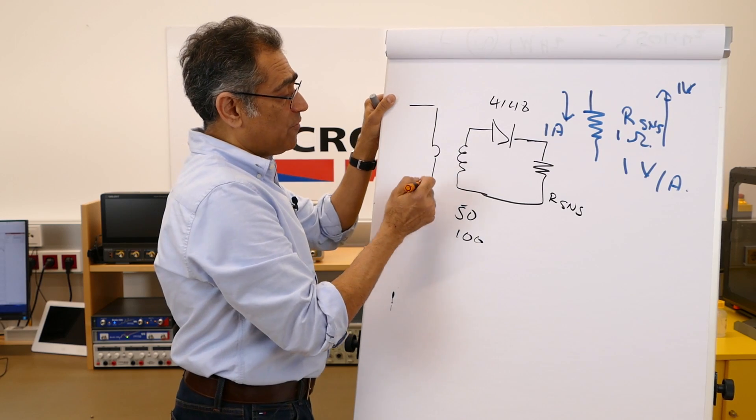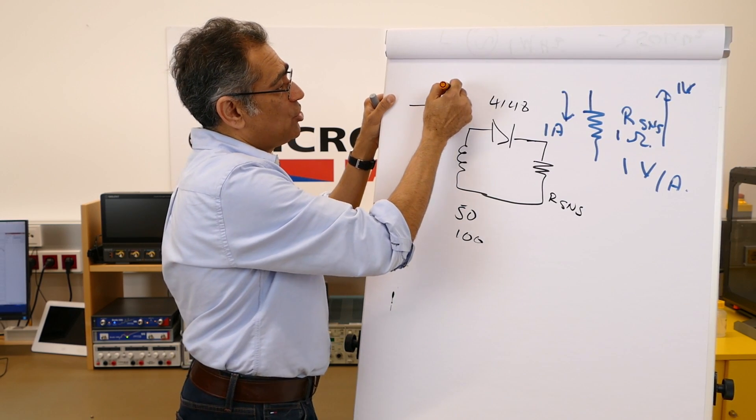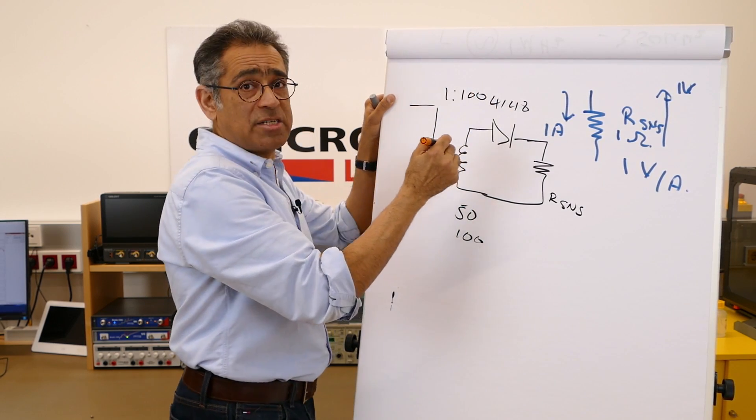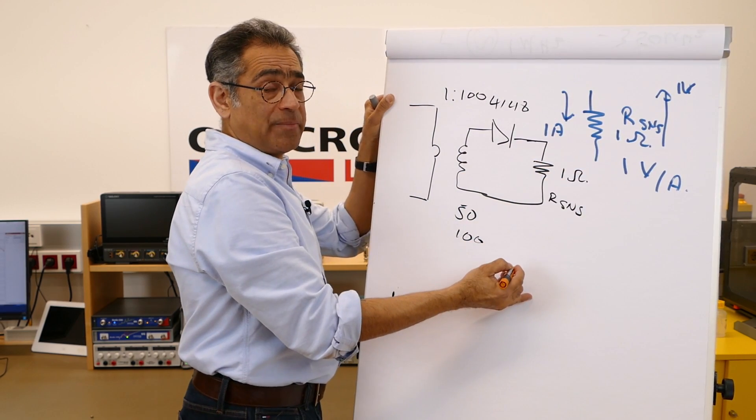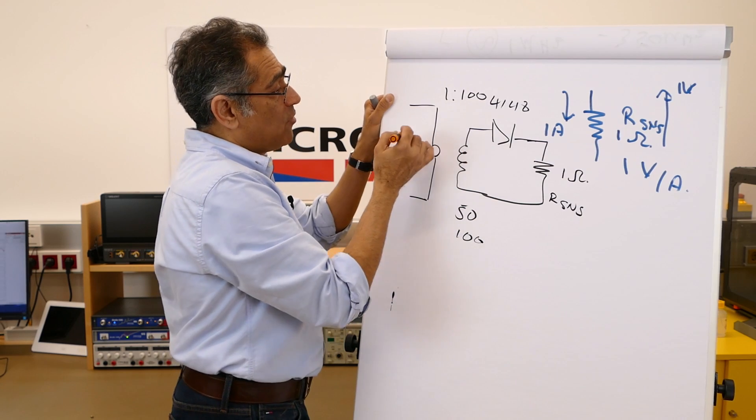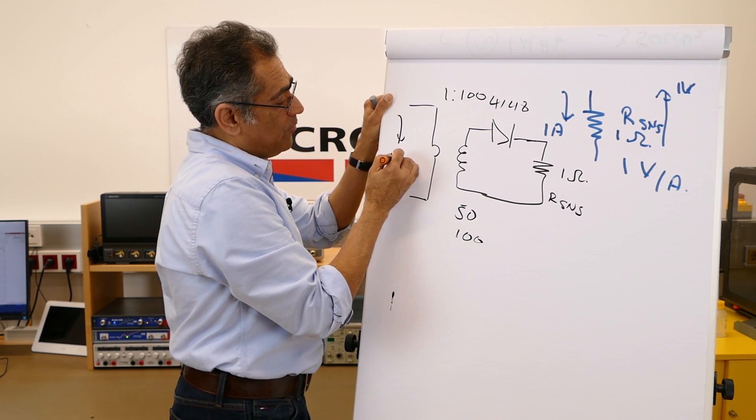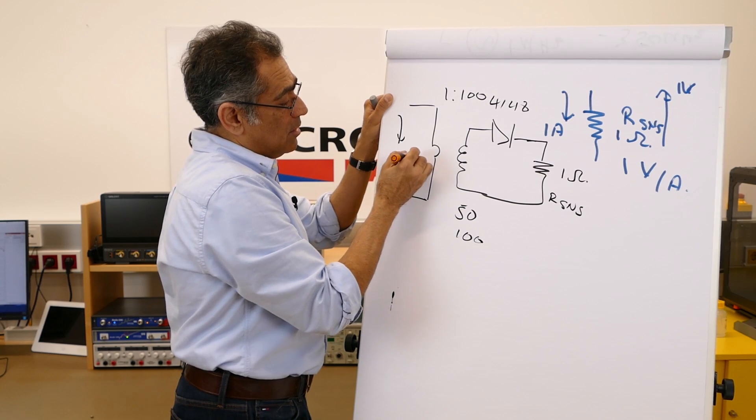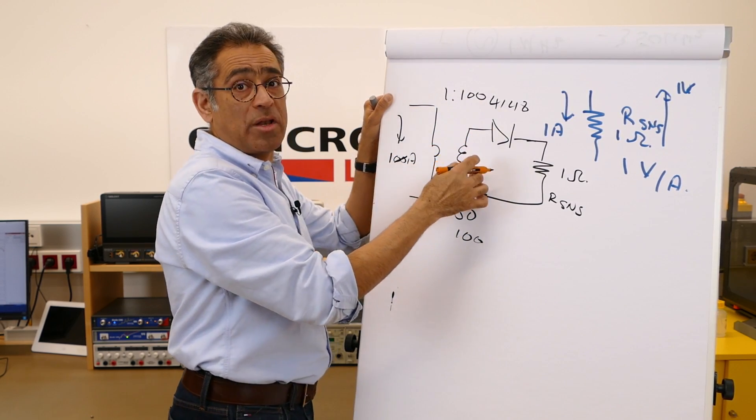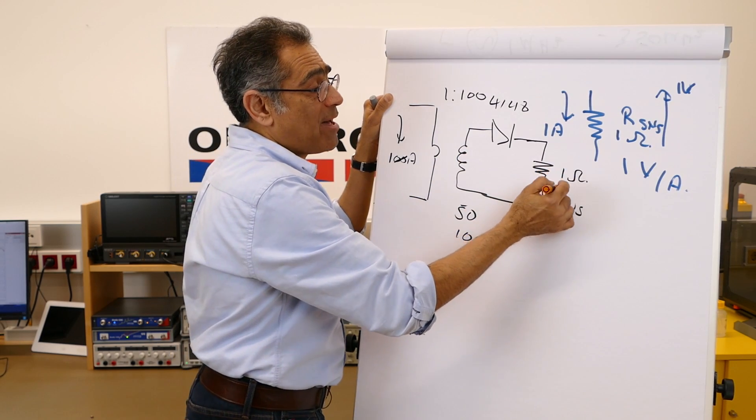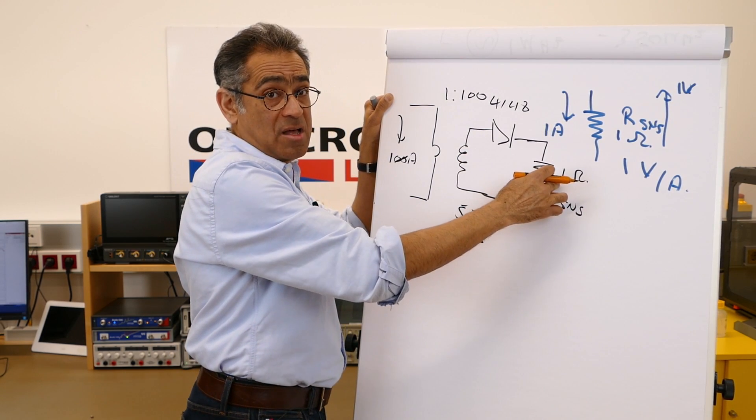Now if you imagine you've now got a transformer with a turns ratio of 1 to 100, you have got 1 ohm here still. But now you have got if 1 amp is flowing here, what's appearing here is 1 amp divided by 100. And therefore the power dissipation on this will be very very low.